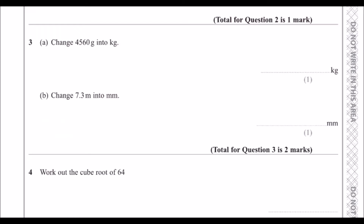Change 4560 grams into kilograms. A thousand grams make a kilogram, so it's 4.56 kilograms. Change 7.3 metres into millimetres. A thousand millimetres make a metre, so we're multiplying by a thousand this time, giving 7300 millimetres.